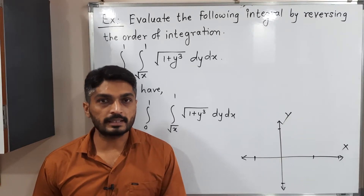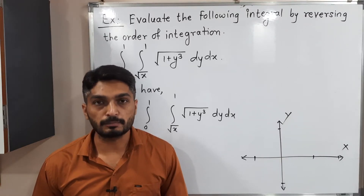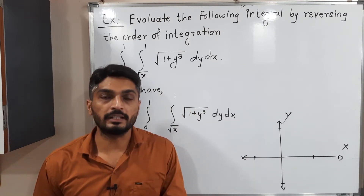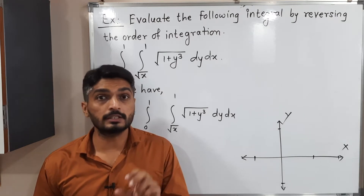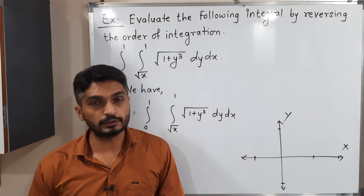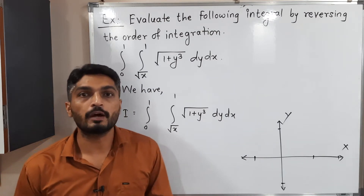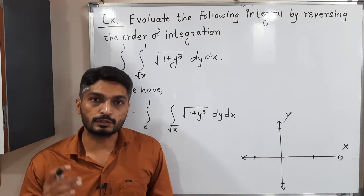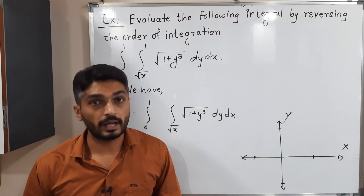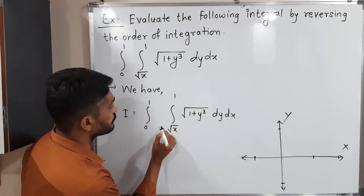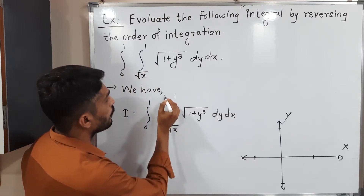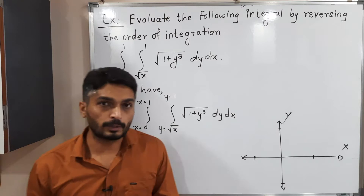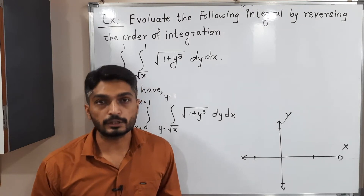Let us discuss this example. We have to solve the double integration by changing the order of integration — that means we have dy dx and we need to bring dx dy by rotating a strip by 90 degrees. First of all we need to consider the given integral: the inner integration is with respect to y and the outer integration is with respect to x. We will find the region of integration and then proceed further.